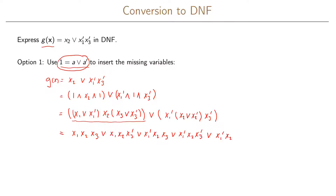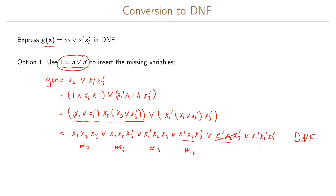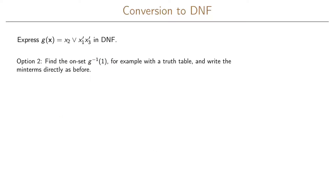Expanding the second part gives us x1'x2x3' OR x1'x2'x3'. We note that x1'x2x3' appears in both parts, so we remove the duplicate. We now have the disjunctive normal form and can identify our minterms: m7, m6, m3, m2, and m0.